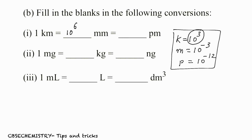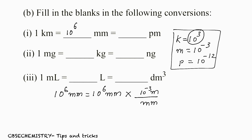Now we can convert 1 kilometer to picometer, or convert 10 raised to 6 millimeter to picometer — your choice. I am choosing 10 raised to 6 millimeter to picometer. Follow the same pattern: 10 raised to 6 millimeter equals 10 raised to 6 millimeter. Our task is to remove millimeter, so write millimeter on the denominator. Milli is 10 raised to minus 3, so write 10 raised to minus 3 meter on the numerator. The fraction equals 1.